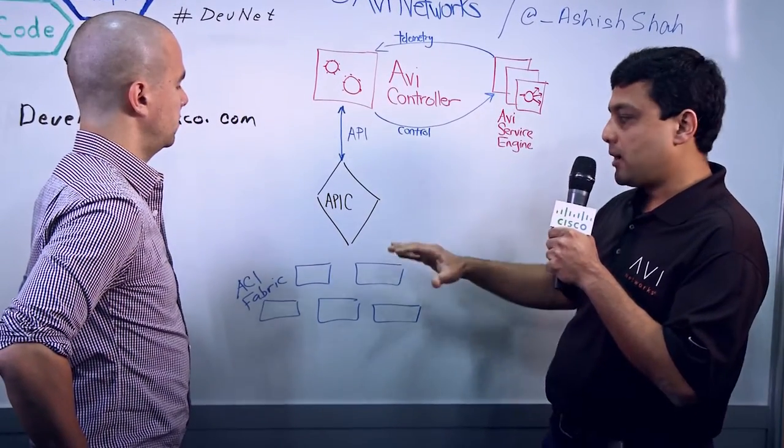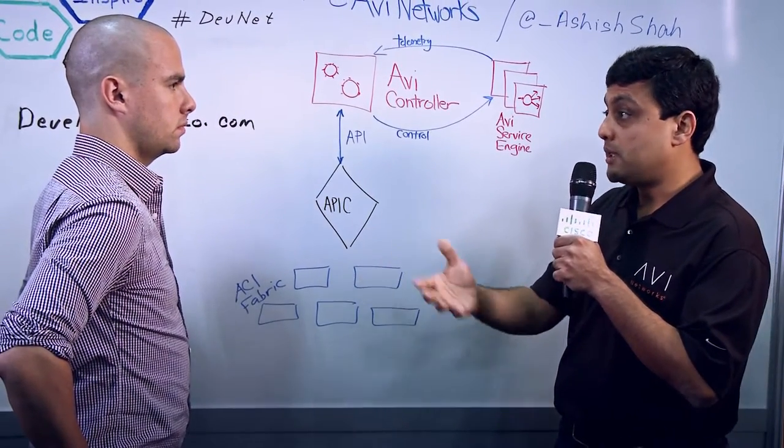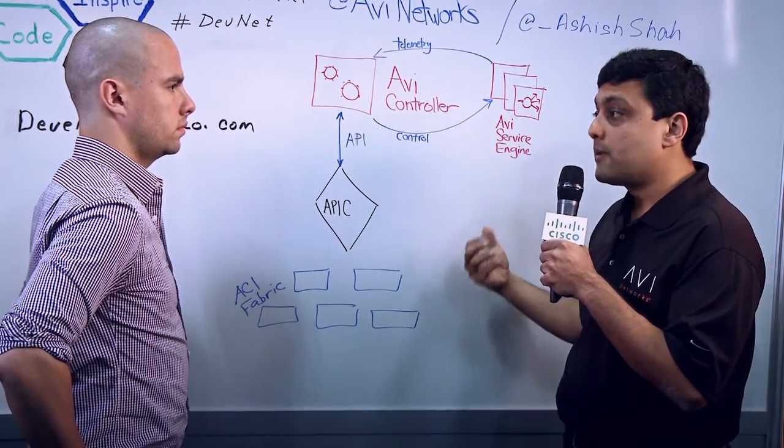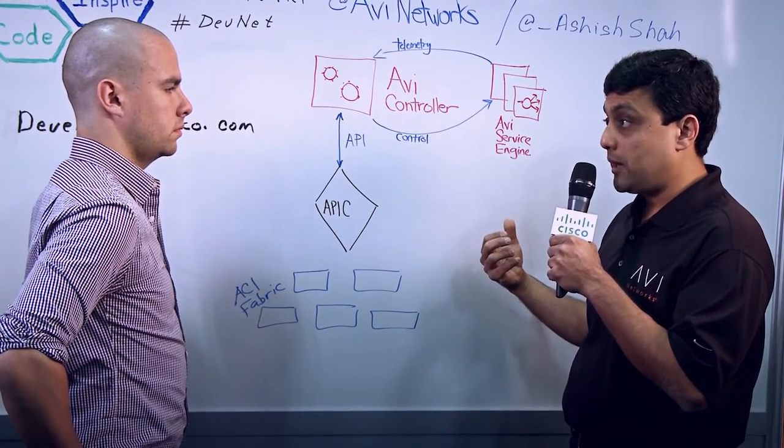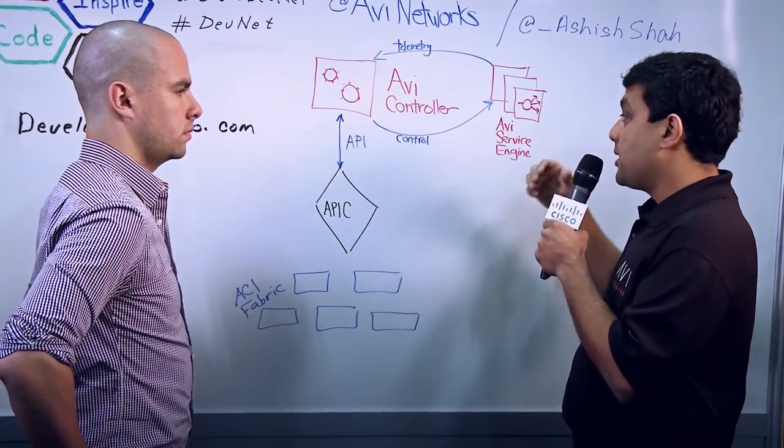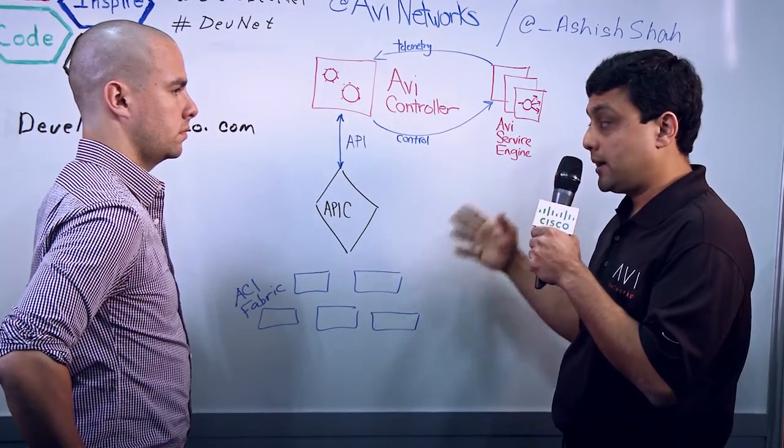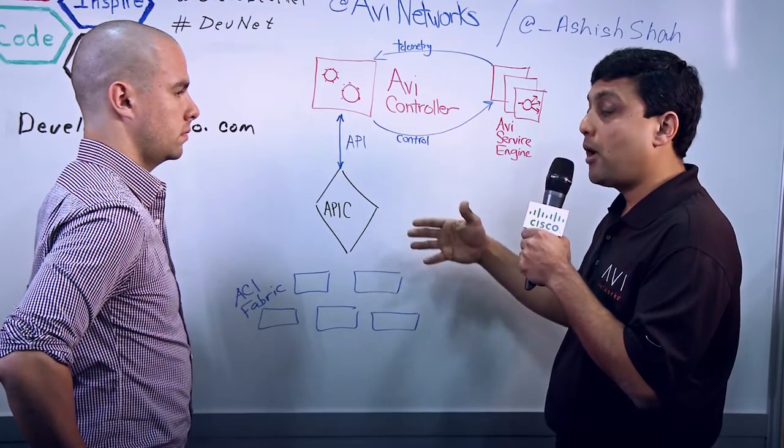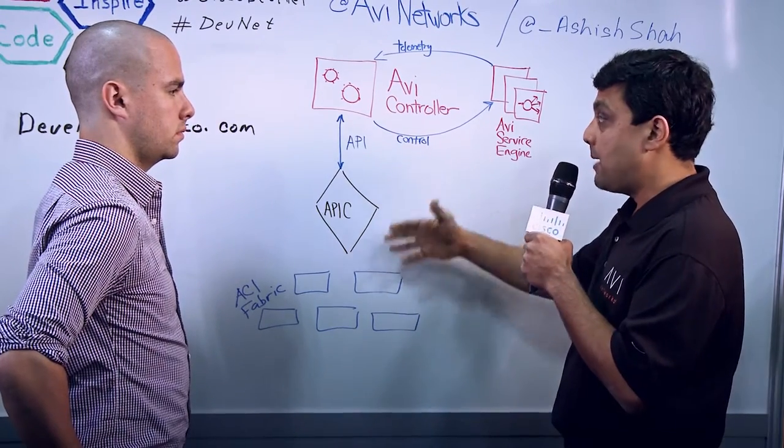Within APIC, let's say you add additional endpoints within the EPG, or you remove malicious endpoints from your EPG, AVI controller automatically gets that information through REST API, provisions the load balancers appropriately, so that the configuration and the policies are always in sync between APIC and AVI.